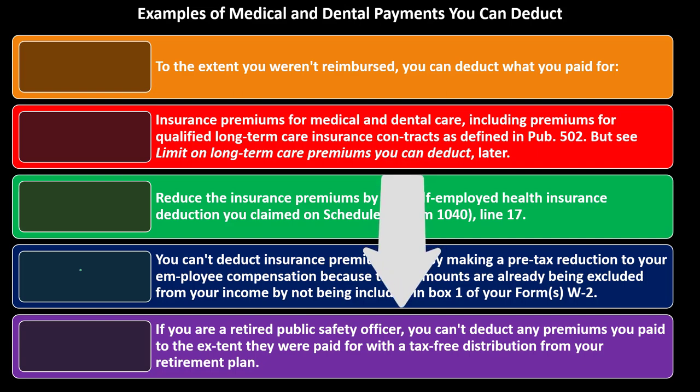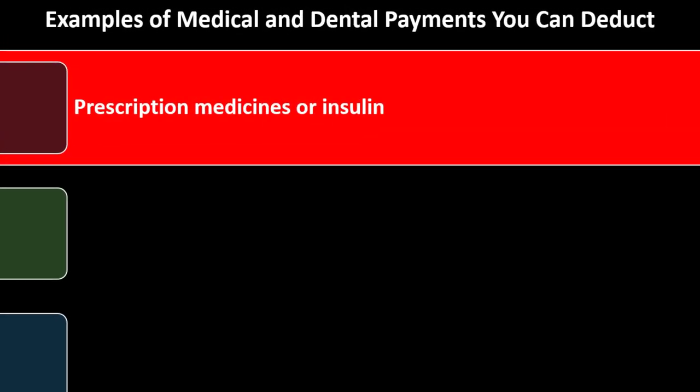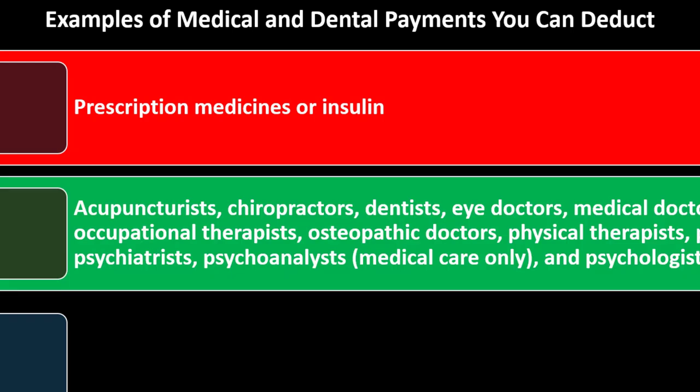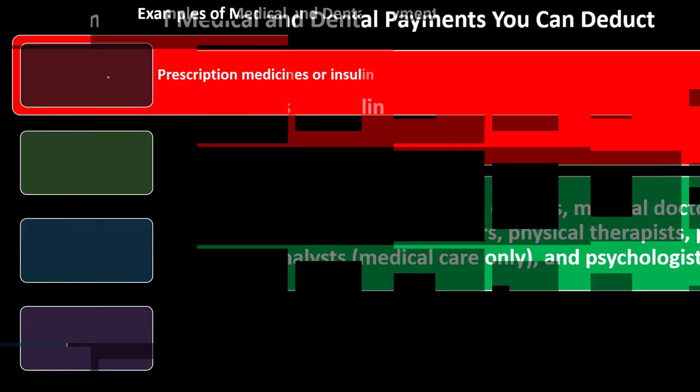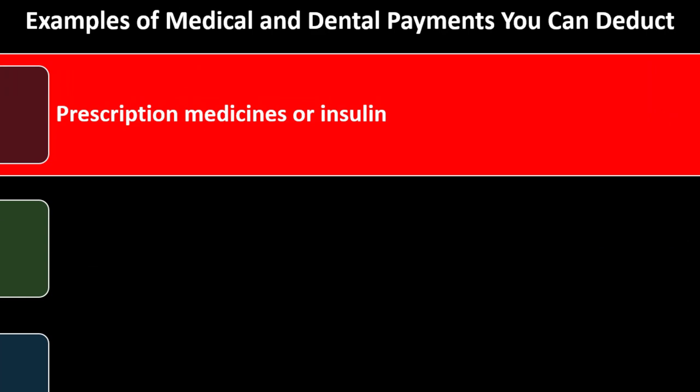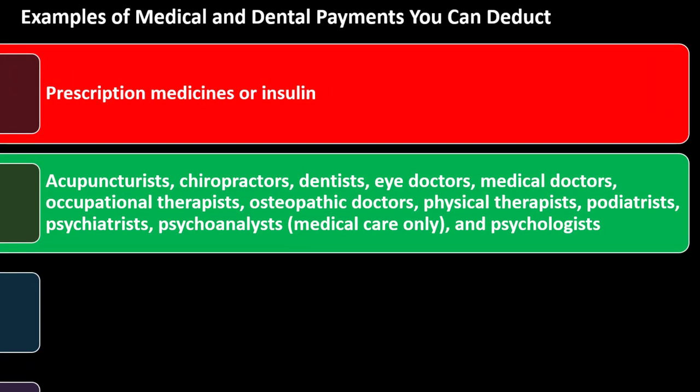If you are a retired public safety officer, you can't deduct premiums paid with a tax-free distribution from your retirement plan. Prescription medicines and insulin are possible deductible items. Deductible practitioners include acupuncturists, chiropractors, dentists, eye doctors, medical doctors, occupational therapists, osteopathic doctors, physical therapists, podiatrists, psychiatrists, psychoanalysts for medical care only, and psychologists. Notice that some items once considered fringe — like acupuncturists and chiropractors — are now more included in the mainstream of deductibility.